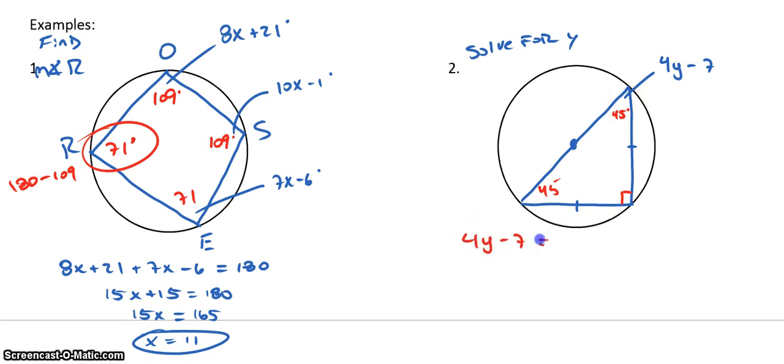So, 4Y minus 7 is equal to 45 degrees. Add 7 to both sides. 4Y is 52. Divide by 4. And Y is 13. And that's all I got. See you later.